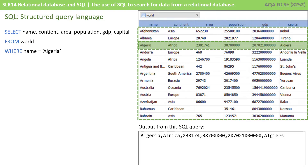With this query, we're saying select name, continent, area, population, GDP, and capital — so that's all the fields from the world table — from world where the name equals Algeria. And you can see from the output window at the bottom, this outputs the entire record. Note that in some languages it would be possible to say something like SELECT *, which would be a wildcard to mean all fields, but this is dependent on the particular implementation of SQL. For the exam, you're best listing out each of the fields you want separated by commas.